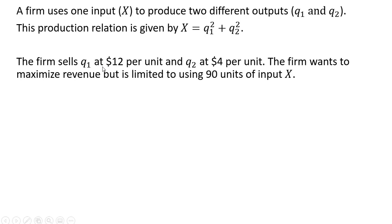The firm sells good 1 at $12 per unit and good 2 at $4 per unit. The firm wants to maximize revenue but is constrained. It is limited to using only 90 units of input x.